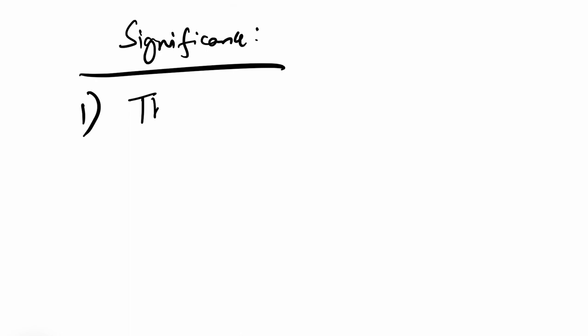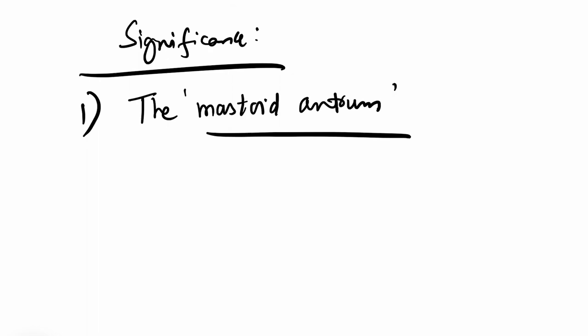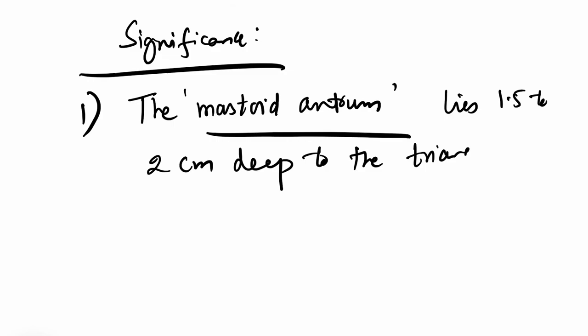The main structure which lies deep to this triangle is the mastoid antrum. The mastoid antrum is simply an air sinus in the petrous part of the temporal bone — in fact, the largest air sinus in the temporal bone. For ENT surgeons, the mastoid antrum lies approximately 1.5 to 2 centimeters deep to this triangle in adults.